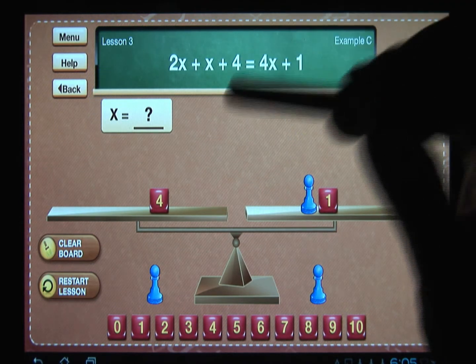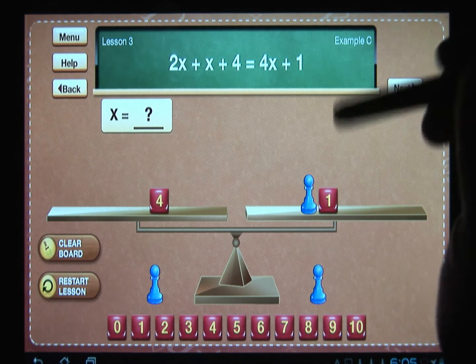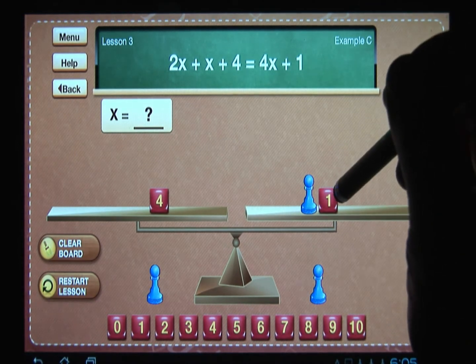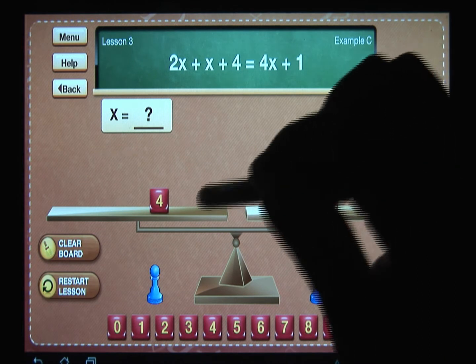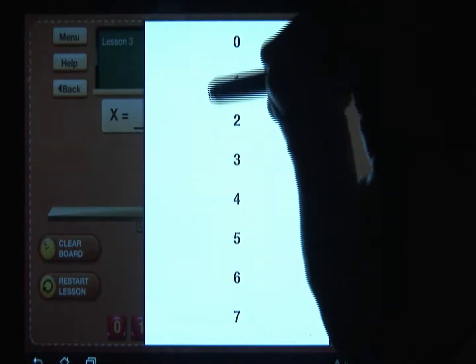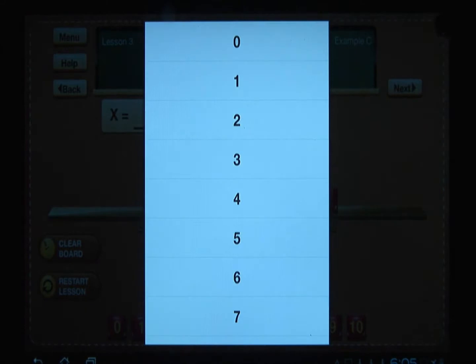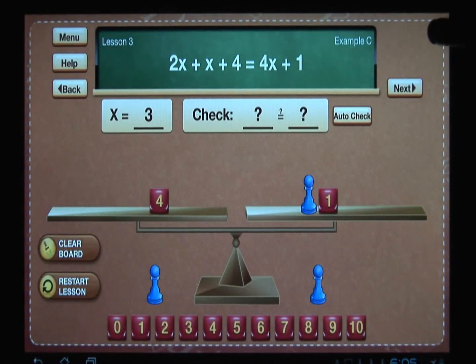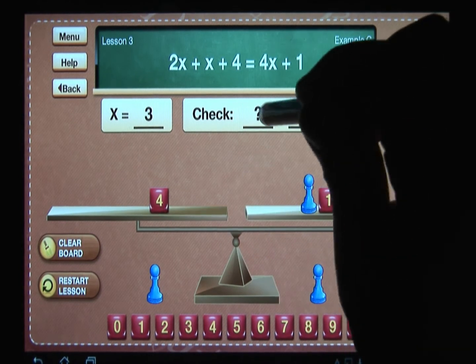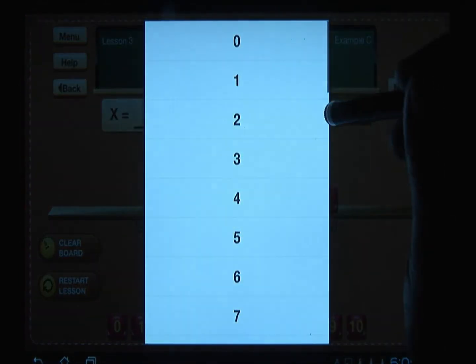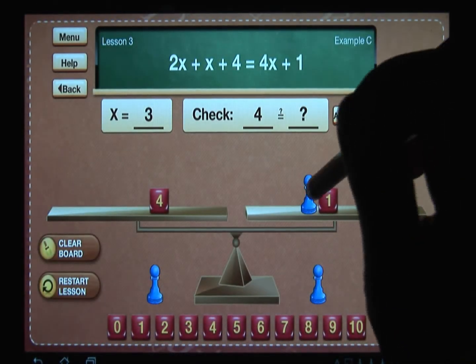Now we have a much simpler equation. On this side I have a weight of four. On this side I have a weight of one and a pawn. So the pawn must be three because three and one is four. So let me place the value of three here. Now notice what happens if you try to do the check in this setup. On the left side I have a four, and on the right side you also have three and one which is four.